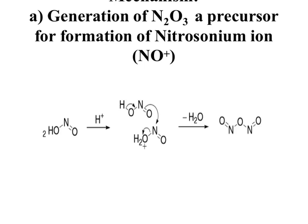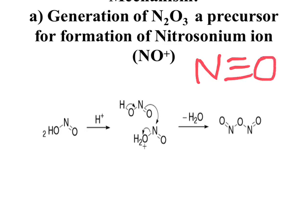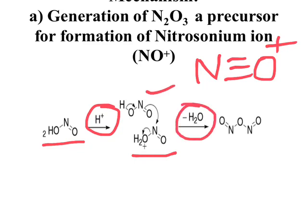The first step is formation of N₂O₃, which is a precursor for the formation of the electrophile called the nitrosonium ion (NO⁺, also written as N≡O⁺). This nitrosonium ion is generated in situ. We take two molecules of nitrous acid (HNO₂) in acidic medium — one molecule gets protonated, and the protonated nitrous acid reacts with the second molecule of nitrous acid, with elimination of a water molecule, leading to formation of N₂O₃.